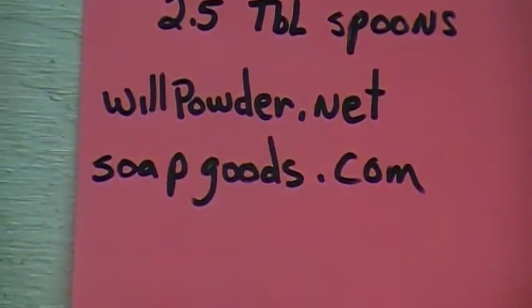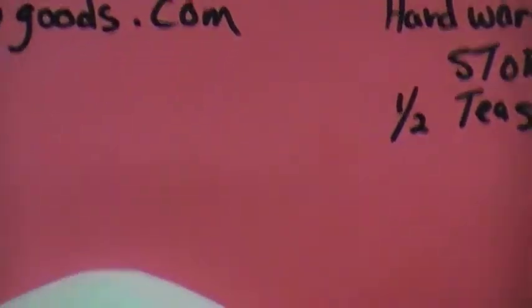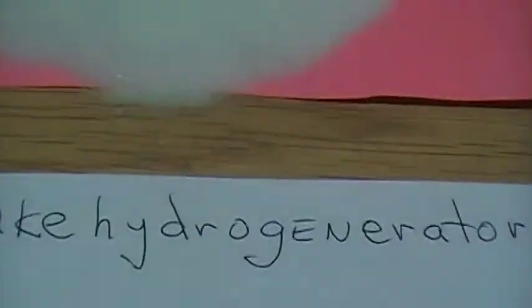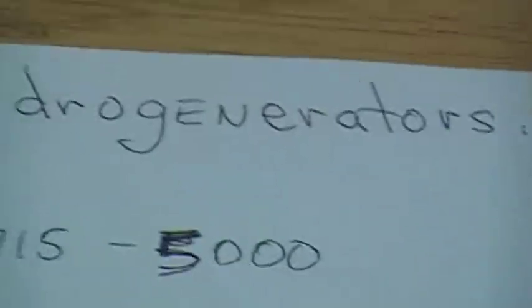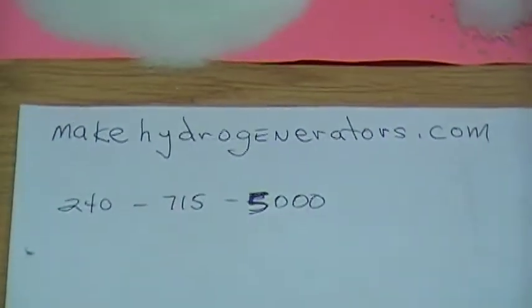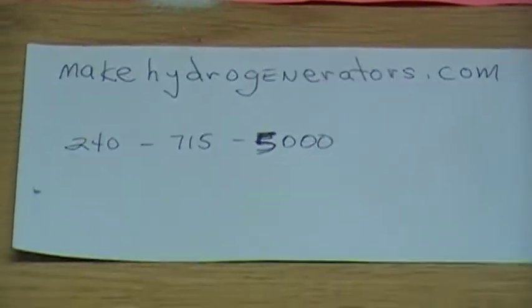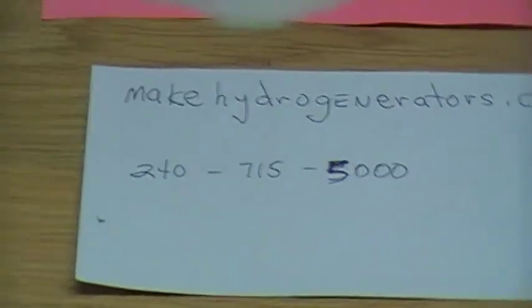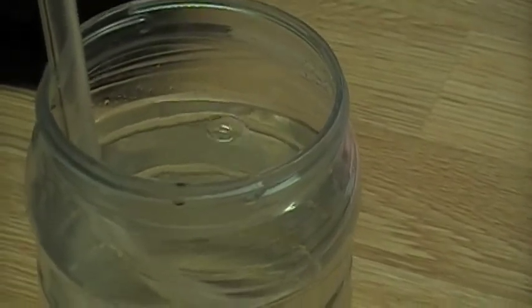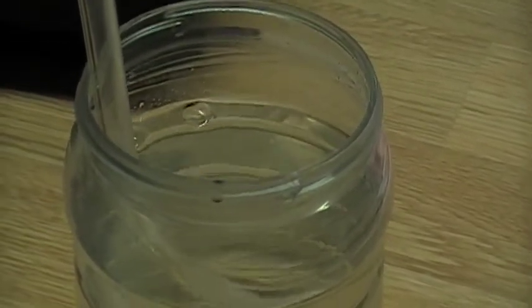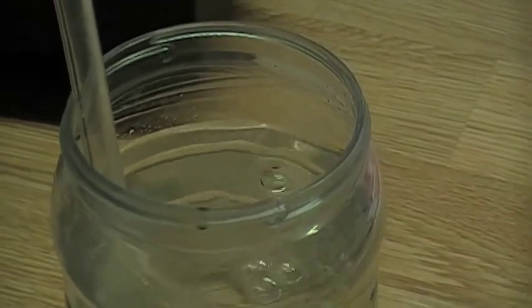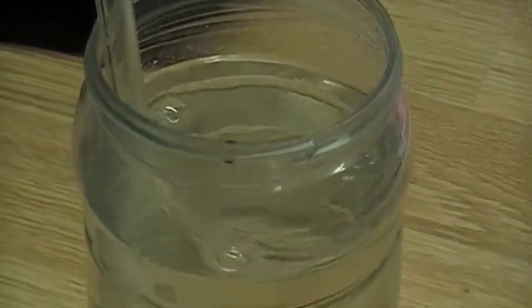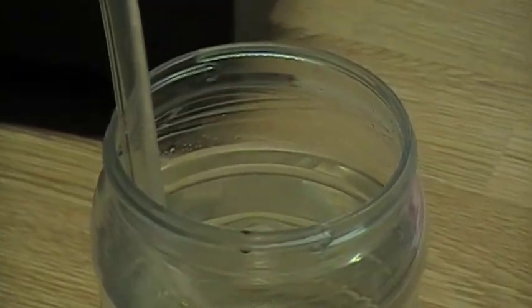Now here's where you can get the sodium citrate: willpowder.net, soapgoods.com. And also here is my website. I'm going to try to have this video on my website, but they also don't like to have big videos. It's makehydrogenerators.com and my phone number is 240-715-5000. And I have 100% success and customer satisfaction on cars without the EPA computers. That's 1996 and older, tractors, combines, generators, irrigation pumps, all that stuff. And if you got any questions, give me a call. We'll see you.